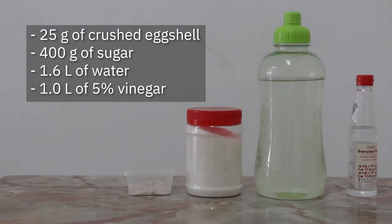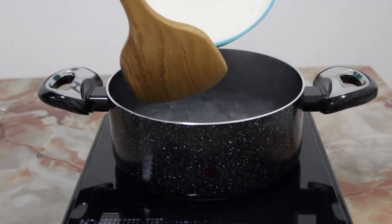The ingredients used are 25 grams of crushed egg shells, 400 grams of sugar, 1.6 liters of water, and 1 liter of 5% vinegar. The synthesis starts off with ethanol.